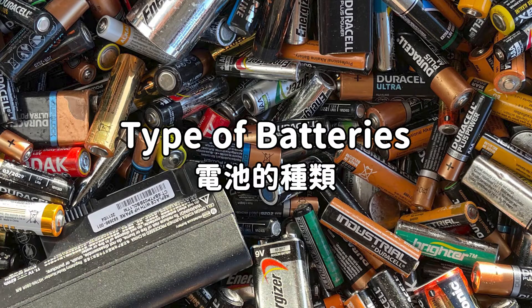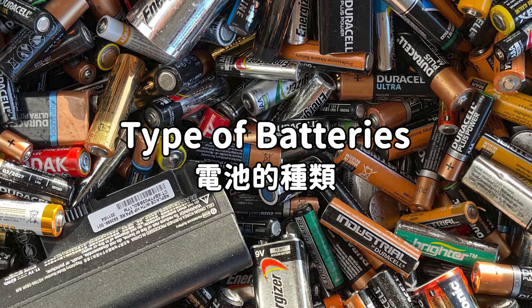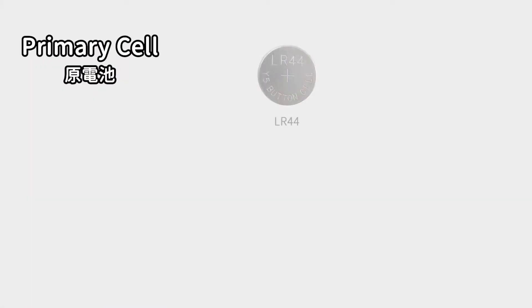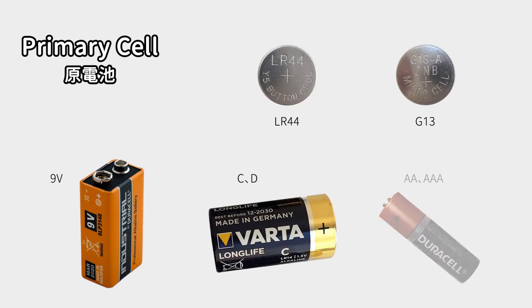Batteries are divided into primary battery and secondary battery. Primary batteries, also known as one-time-use batteries, can only discharge and be discarded. It is a chemical battery that loses its functionality after a certain level of use.